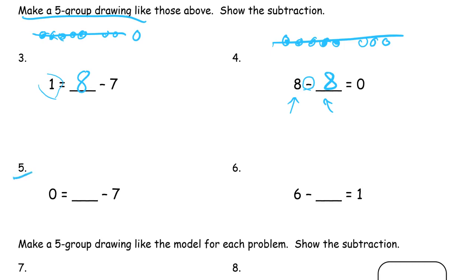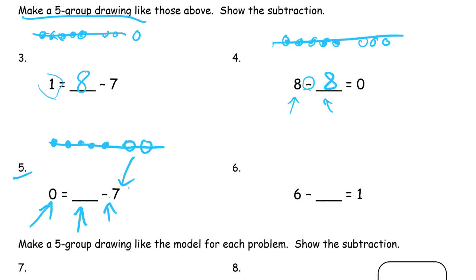Number 5. Here we have our subtraction symbol. So we know: 7 are crossed out and there are going to be 0 left over afterwards. But what we don't know is how many we started with. So 7 are crossed out — let's draw 7 crossed-out beads: 1, 2, 3, 4, 5, 6, 7. And these are all crossed out. It says there are 0 that aren't crossed out — 0 left over after we subtract 7. So we had to start with all 7.